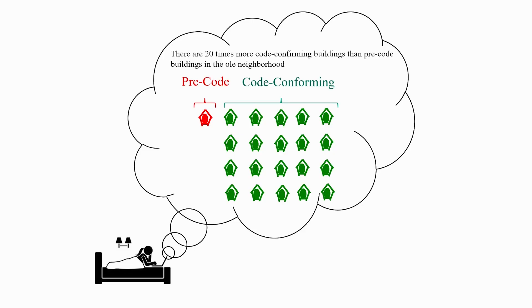Now this made Halisi rethink her initial judgment about the likelihood that the collapsed building is a pre-code building. She thinks to herself, the fact that there are many more code conforming than pre-code buildings should influence her belief about what type of building collapsed. Specifically, it would reduce her degree of belief that the collapsed building was a pre-code building.